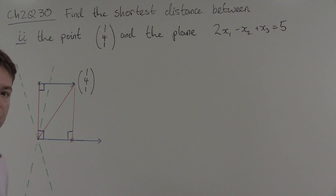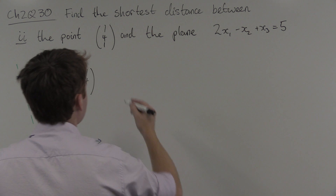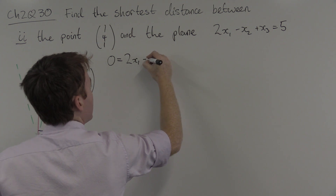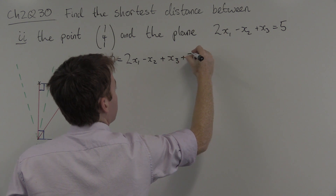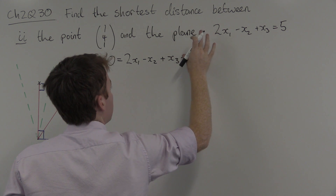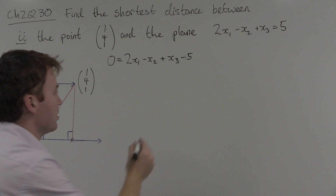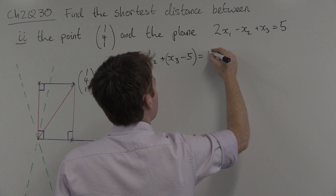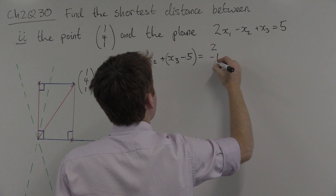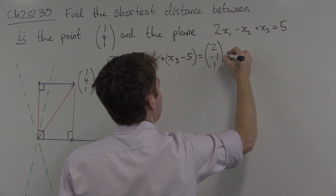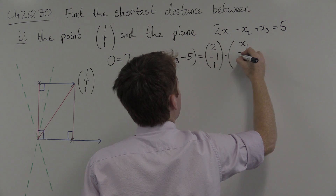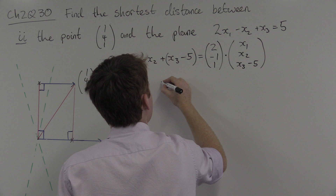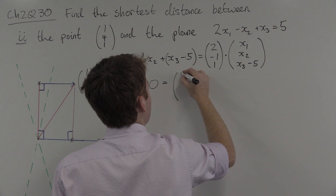You convert from Cartesian form to point-normal form like this: take everything over to one side and leave a 0 on the other side. So 0 = 2x₁ - x₂ + x₃ - 5. Then write that as the dot product: (2, -1, 1) · (x₁, x₂, x₃) - 5.